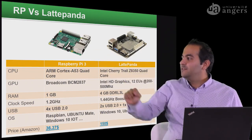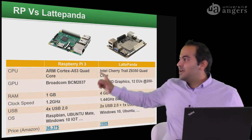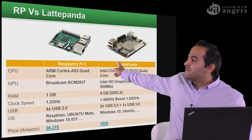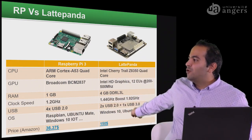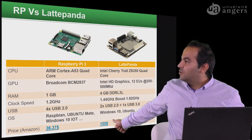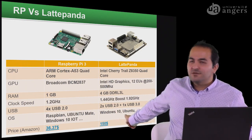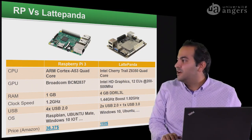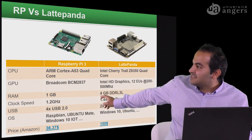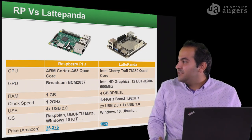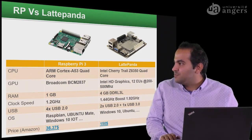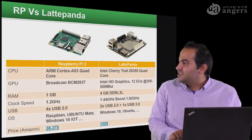For this, we have an option called LattePanda — it's another small computer. The size is almost the same as the Raspberry Pi. In the LattePanda, we have one USB 3 port plus two USB 2 ports. We can install Windows 10, Windows 8, or Windows 7 on it, and also Ubuntu or Linux if wanted. It has more RAM compared with the Raspberry Pi, an Intel CPU, and an Intel HD graphics card.